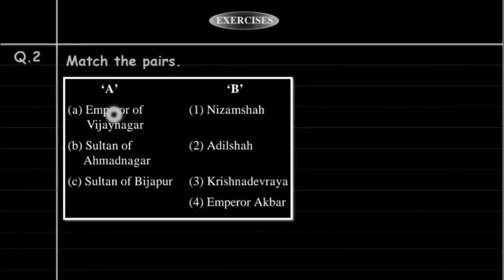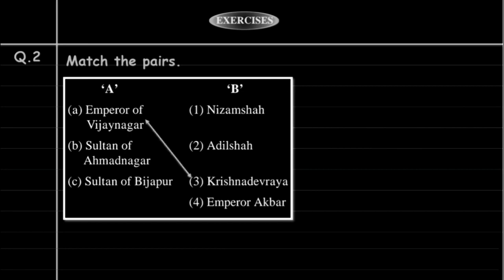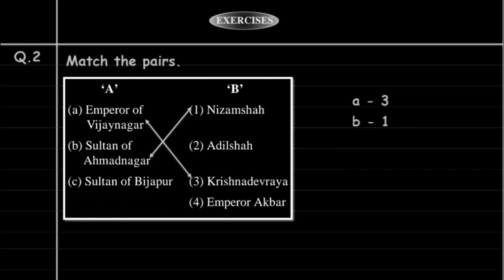Question 6: Match columns A and B. Who was the Emperor of Vijayanagar? Who was the Sultan of Ahmadnagar? And who was the Sultan of Bijapur? The answer is Adil Shah was the Sultan of Bijapur.